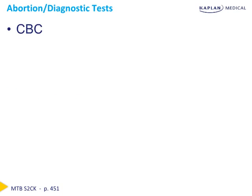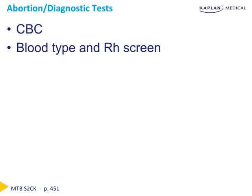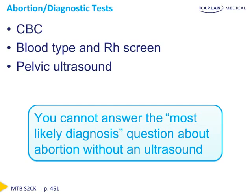The workup for a suspected abortion on the Step 2 exam includes a CBC, which will evaluate blood loss and the need for a transfusion. We may also get a differential to assess for potential infection. We'll get a blood type and Rh screen, should blood need to be transfused, and also to evaluate for the need for Rho-GAM if the mother is Rh negative. We'll get a pelvic ultrasound to help distinguish between the different types of abortion. It's important to remember you can't answer the most likely diagnosis question about abortion without an ultrasound.